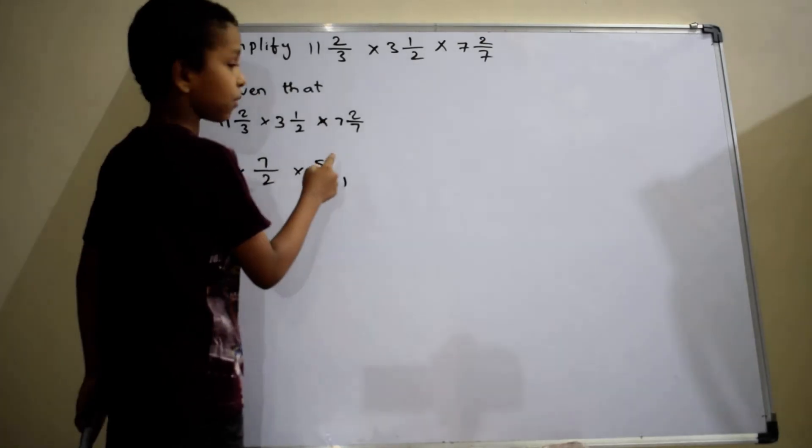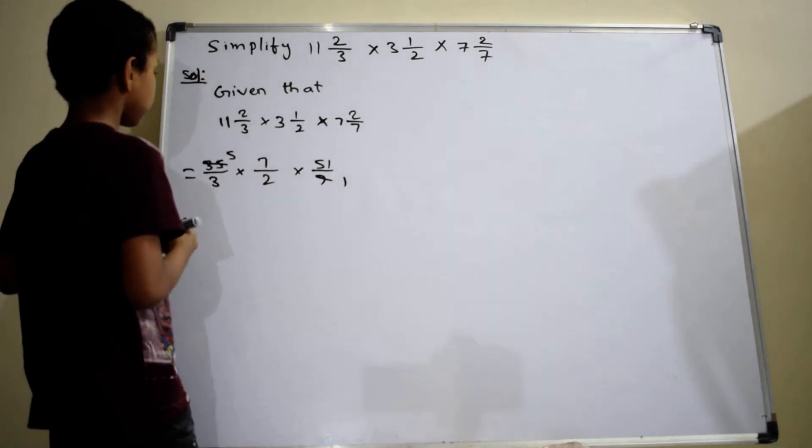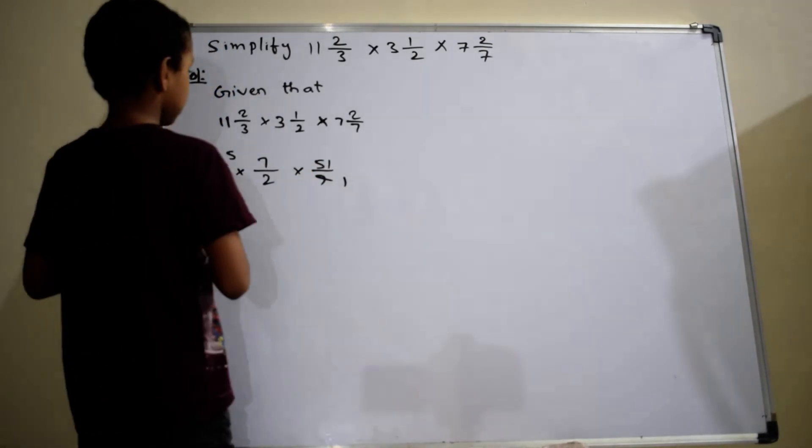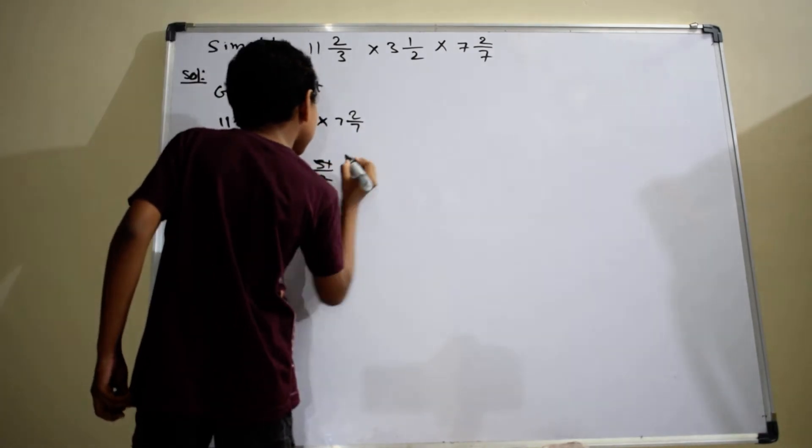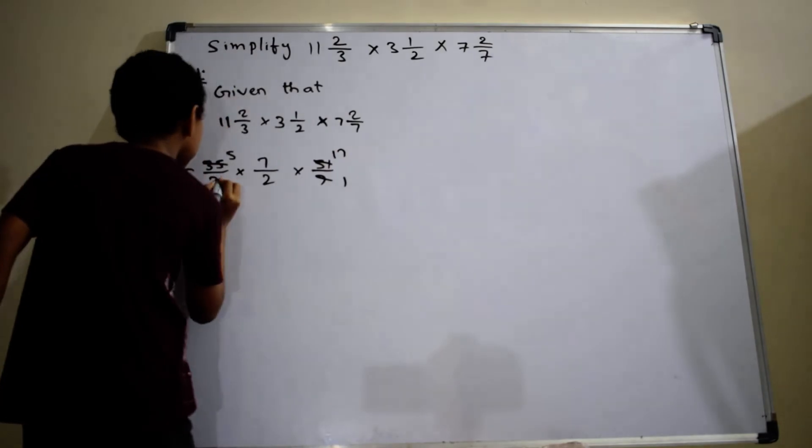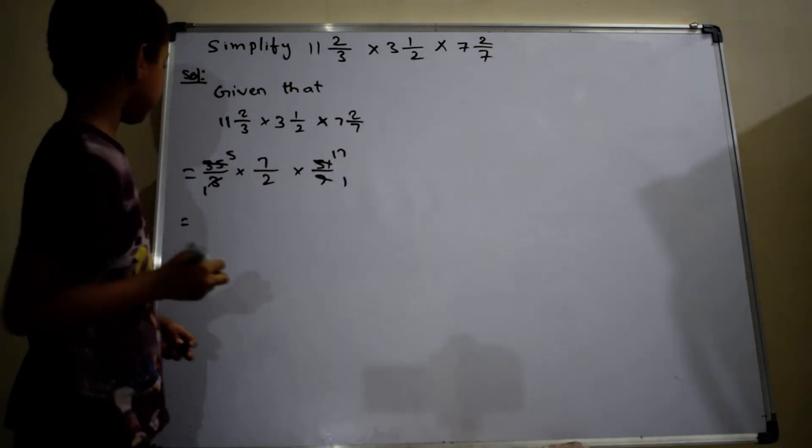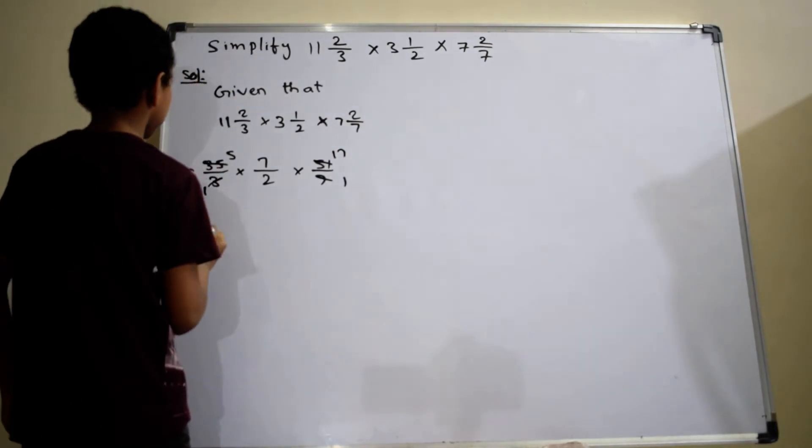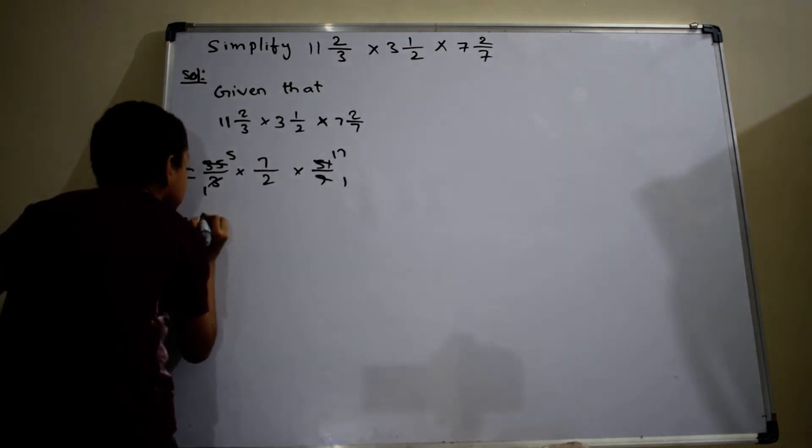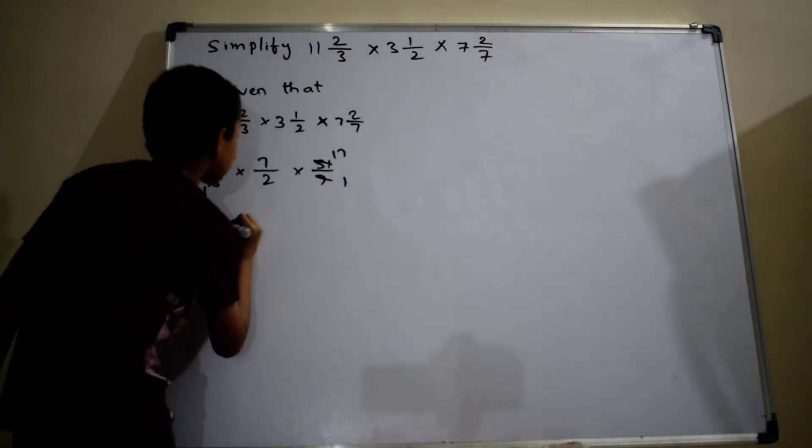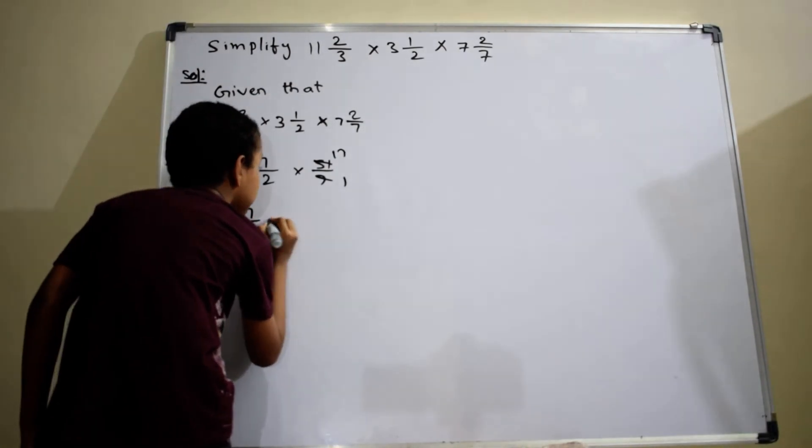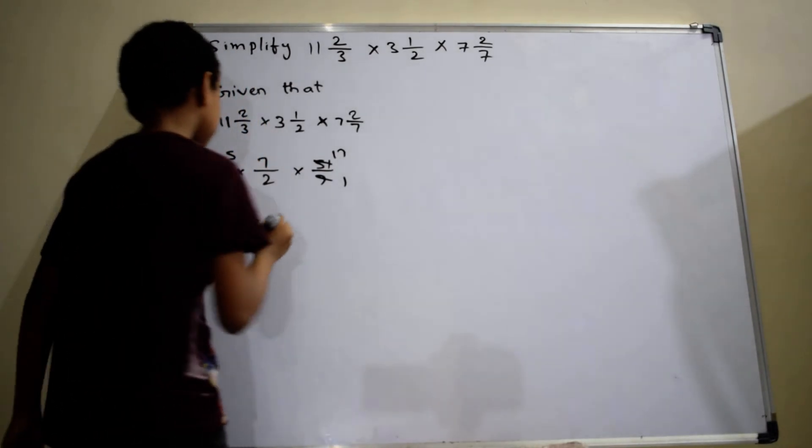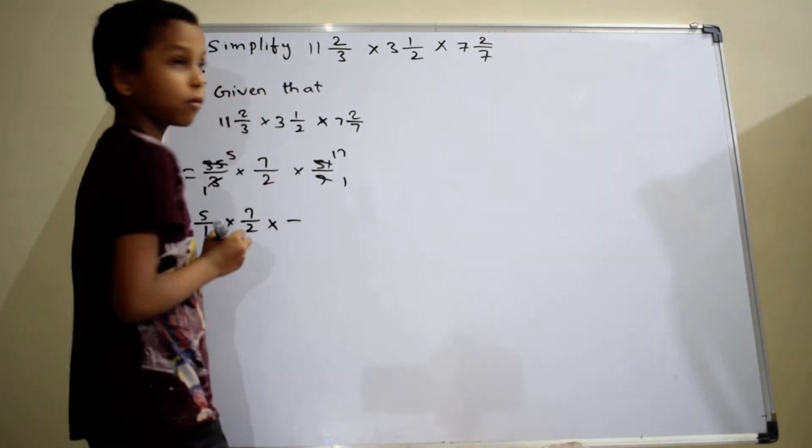3 divided 51. So, we have to cancel 17 times in 51, which is equal to 5 by 1 into 7 by 2 into 17 by 1.